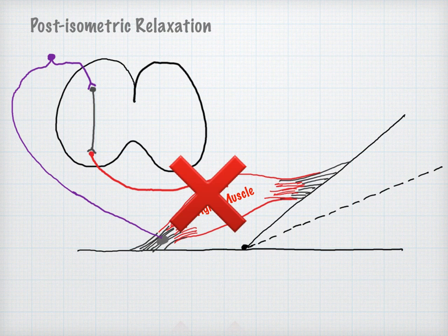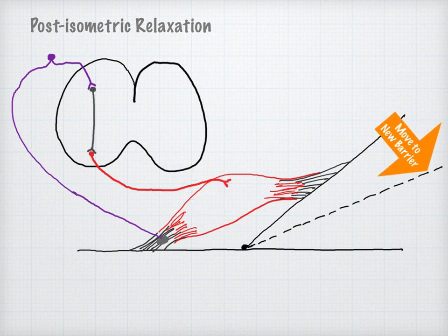Once the gamma gain mechanism of the muscle is reset by muscle energy activation in the direct treatment method, the somatic dysfunction will clear.